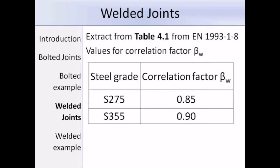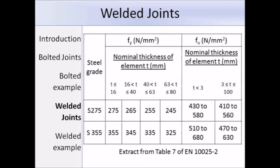This is an extract from table 4.1, which gives the values of beta W depending on the steel grade used. For grade S275 steel, the correlation factor is 0.85, and for grade S355 steel it is 0.9. We also use an extract from the product standards to determine the ultimate tensile strength FU. Now that we have all the terms, we can work out FVWD using equation 4.4. That's a brief summary of how to work out the design resistance of a weld, and next I'll go through a worked example.